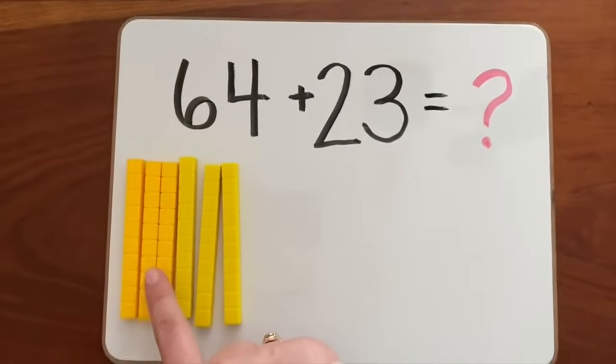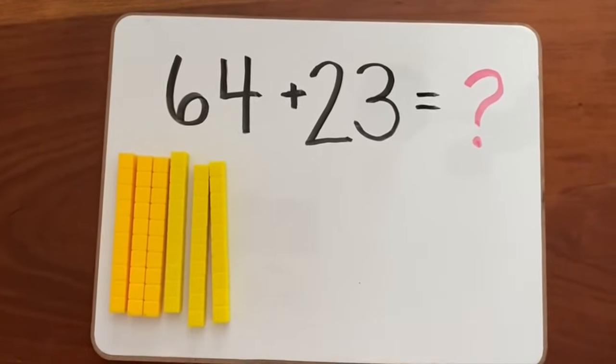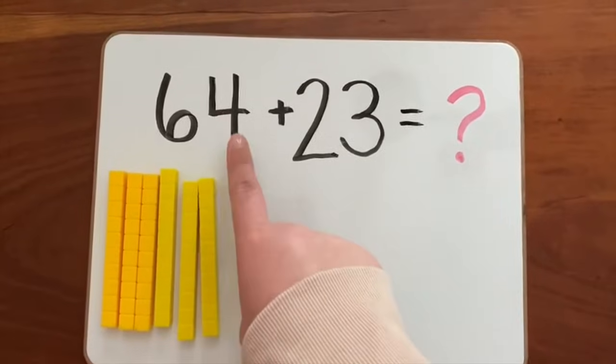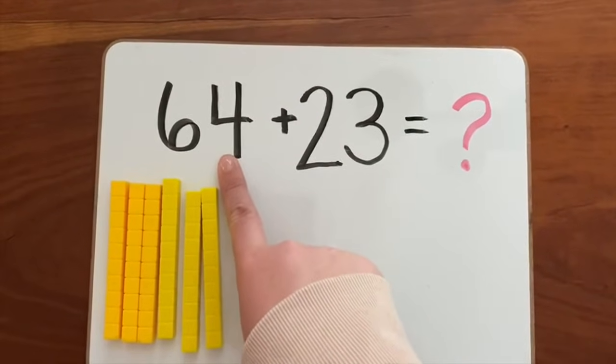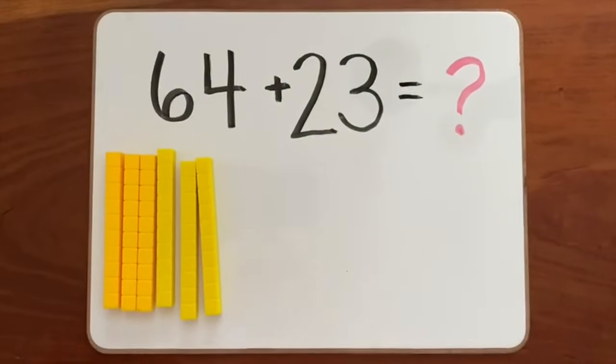We have one, two, three, four, five, six longs. The number four is in the ones place, so that tells us that we need four cubes to make this number.